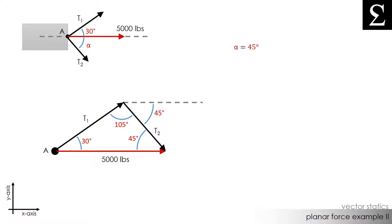Since we know the magnitude of the resultant force, we can use the law of sines to calculate the tension force T1 and T2. We can write the sine of 45 degrees divided by T1 is equal to the sine of 30 degrees divided by T2 is equal to the sine of 105 degrees divided by 5,000. Using this relationship between the three sides and the three angles, we can calculate T1 to be 3,660 pounds and T2 to be 2,590 pounds.